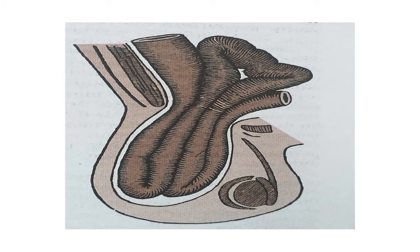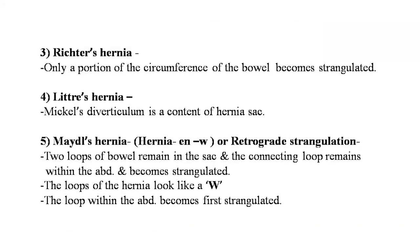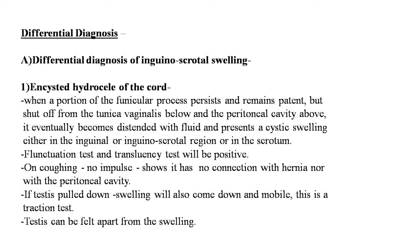Here is the image showing Maydl's hernia, clearly showing the double loop of intestine in a W shape. Richter's hernia: only a portion of the circumference of the bowel becomes strangulated. Littré's hernia: a Meckel's diverticulum in the content of the hernia sac. In Maydl's hernia shown in the image, the two loops of bowel remain in the sac while the connecting loop within the abdomen becomes strangulated — the loops look like a W shape, with the loop within the abdomen becoming first strangulated.